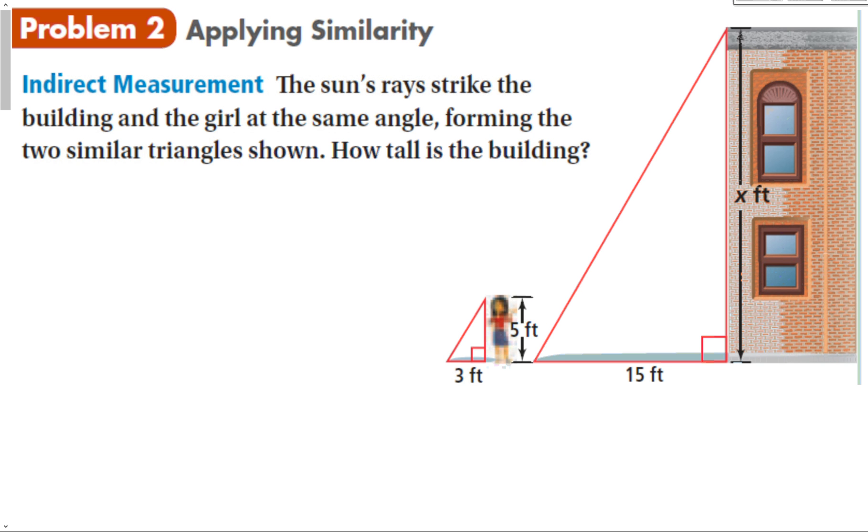If you know how far away from the building you are standing, and how tall you are, and how tall your shadow is - a lot of things to know - but you can figure out the length of the building. Much easier to measure something on the ground and something small like this than trying to figure out how tall the building is, going up to the top of the building with a tape measure. Now we have X over 5 equals 15 over 3. That's 3X equals 75. Divide both sides by 3, and we get X equals 25 feet.